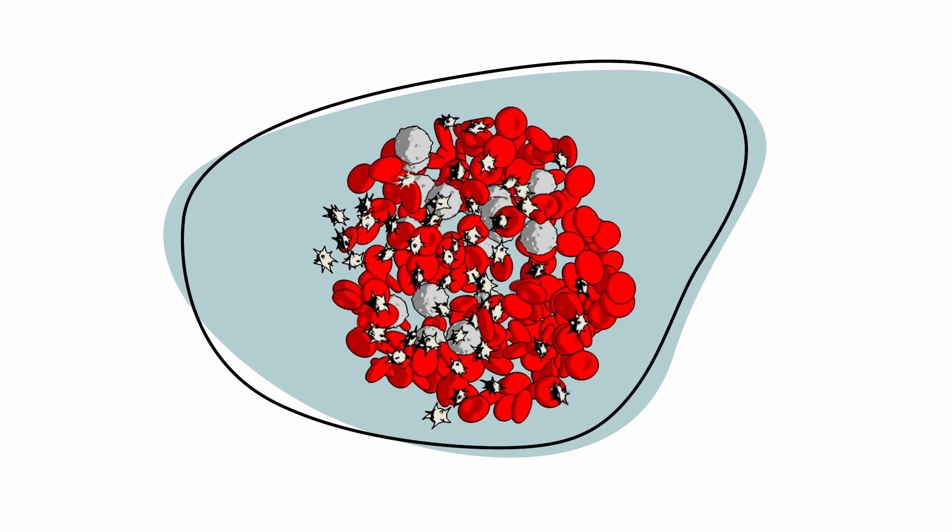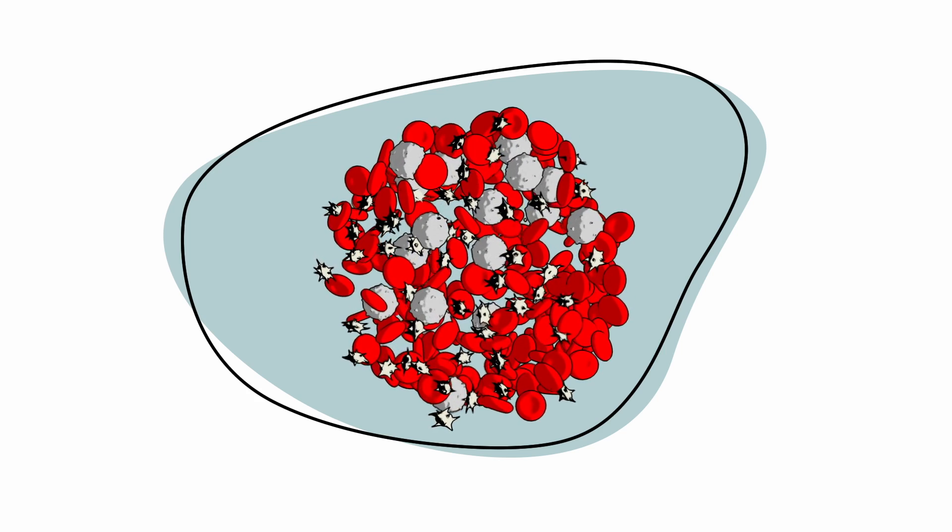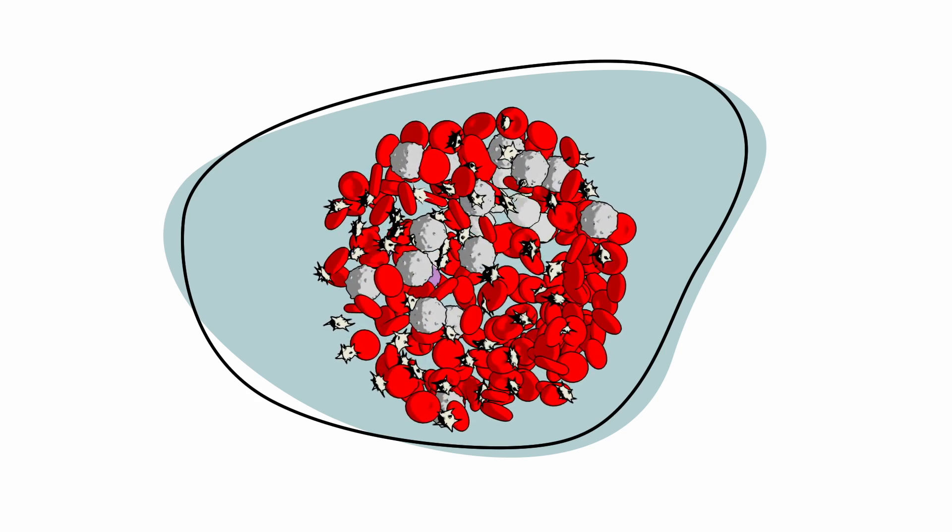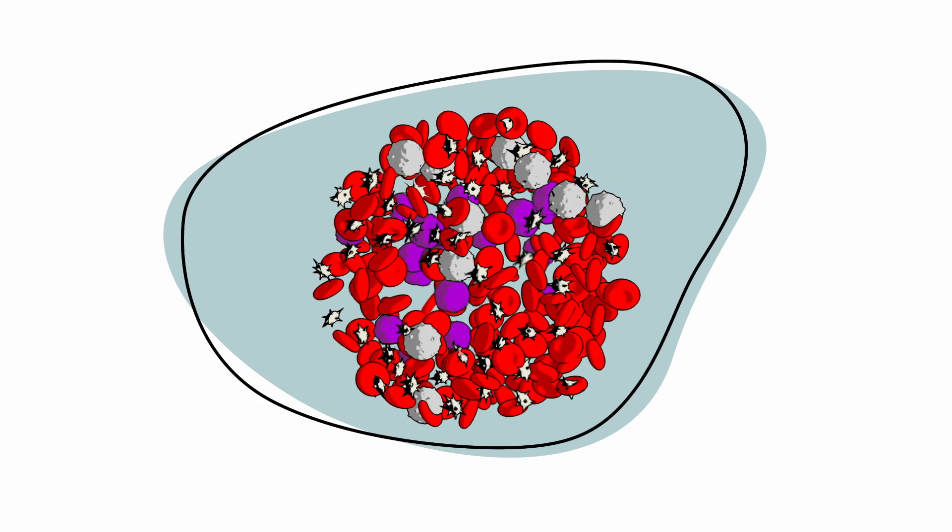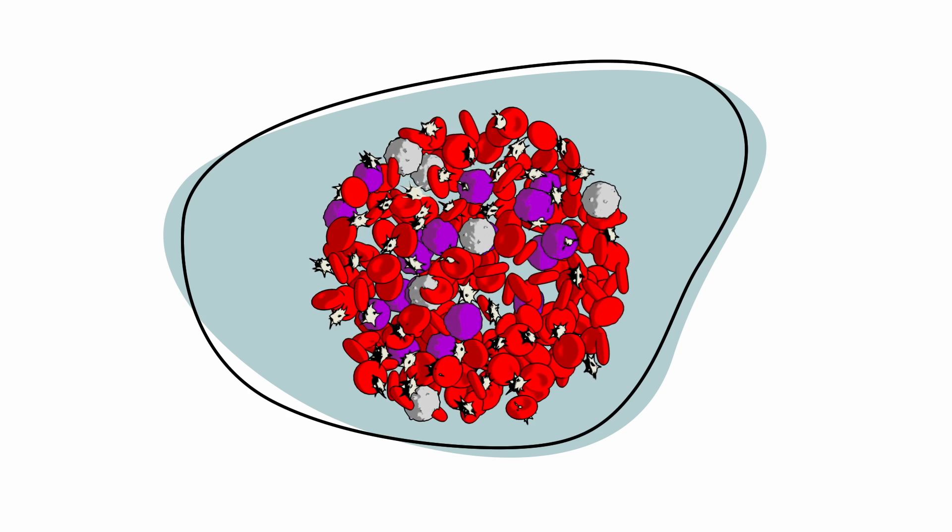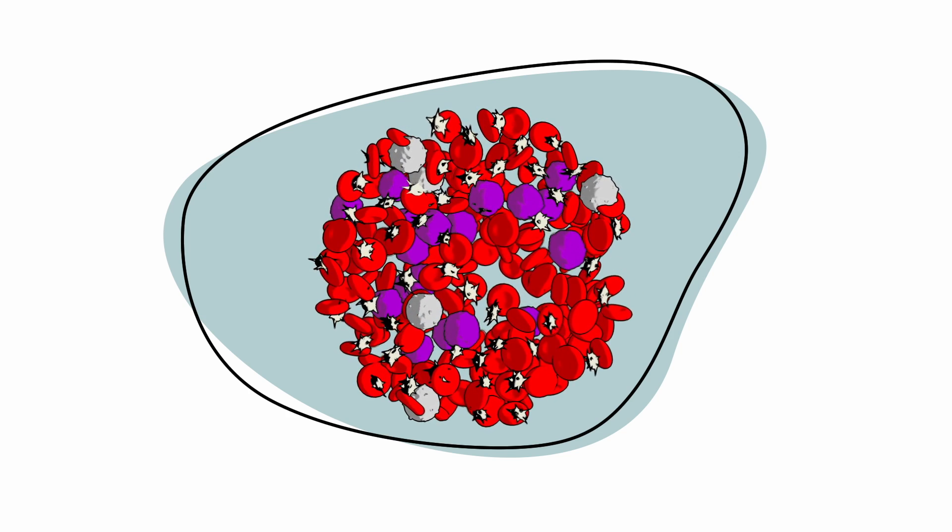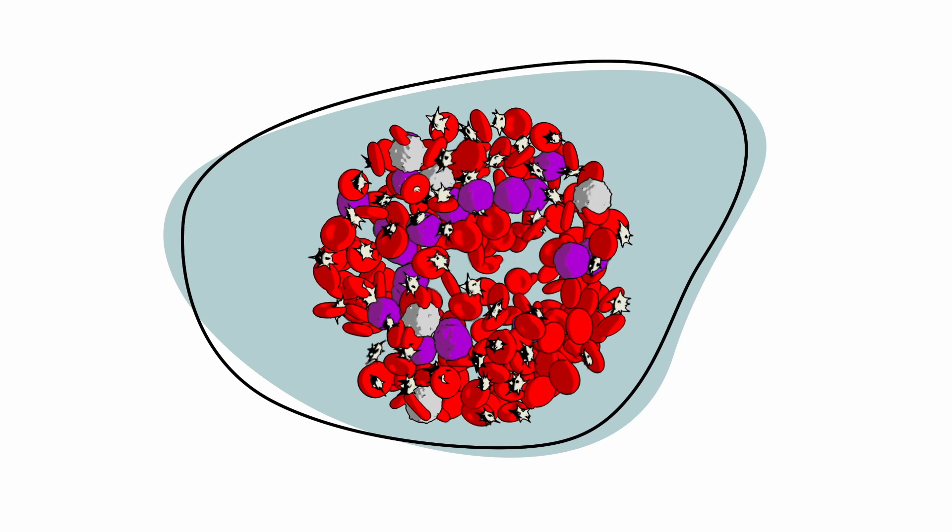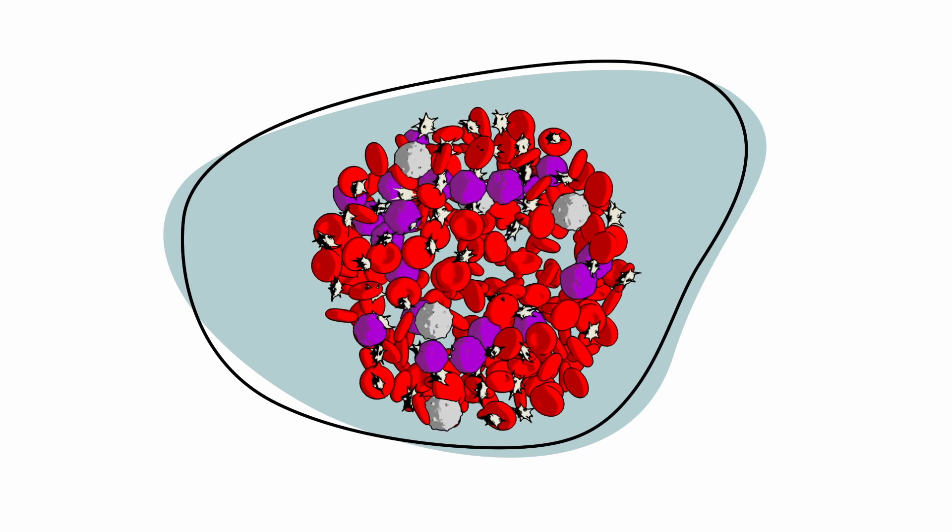With HL, a type of white blood cell called lymphocytes undergoes changes in the DNA or genetic code. These abnormal cells are called lymphoma cells, or HL cells. These cells multiply quickly, upsetting the growth and normal function of the healthy cells. Over time, they can spread to other tissues and organs.